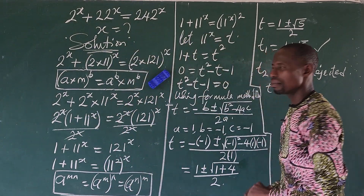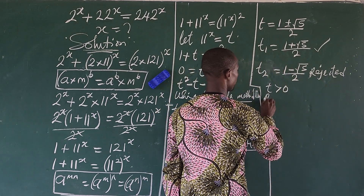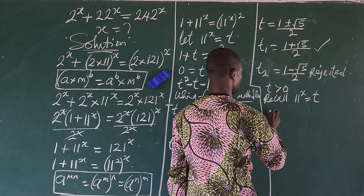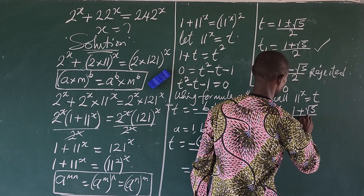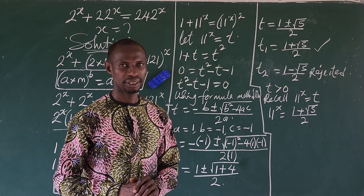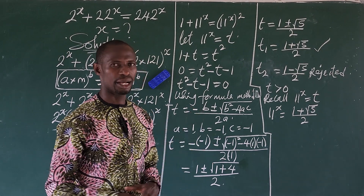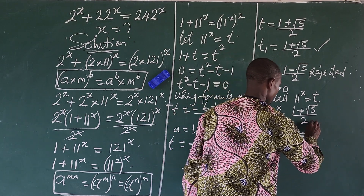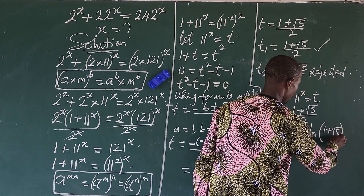Recall that we set 11 to the power of x equal to t. Taking only t₁, we have 11 to the power of x equals (1 + √5) / 2. To solve for x, we take the natural logarithm of both sides: ln(11^x) = ln((1 + √5) / 2). Applying the log quotient rule, the right side becomes ln(1 + √5) minus ln(2).